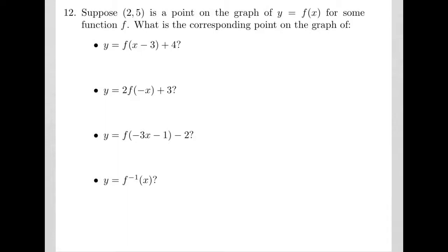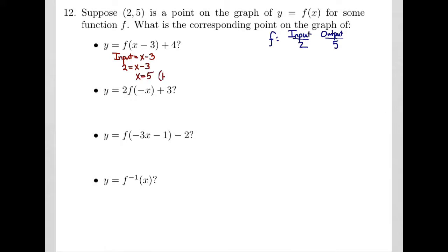Problem 12 tells us to suppose that (2, 5) is a point on the graph y equals f of x. That means 2 is the input and 5 is the output for our function. In the first transformation, the function sees as input x minus 3. Since the original input was 2, and I have x minus 3, adding 3 gives 5 — in other words, there was a horizontal shift of plus 3.